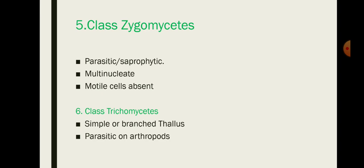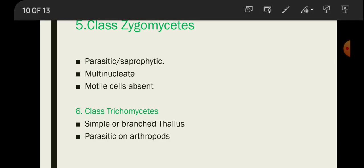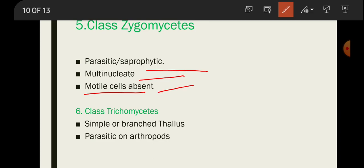Zygomycetes are parasitic or saprophytic in nature, and are multinucleate. Motile cells are absent. In the lower classes of fungi, motile cells are present, but as we go to higher classes, flagella are no longer present — motility is lost.